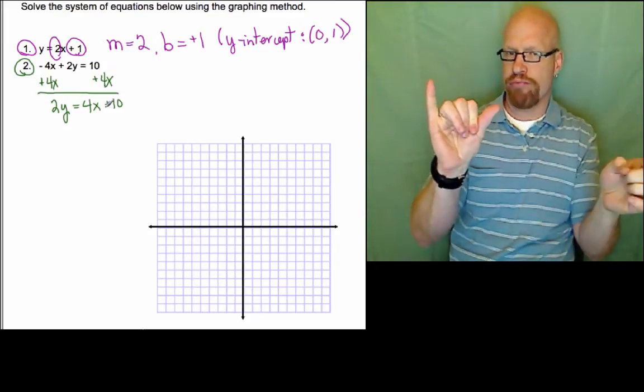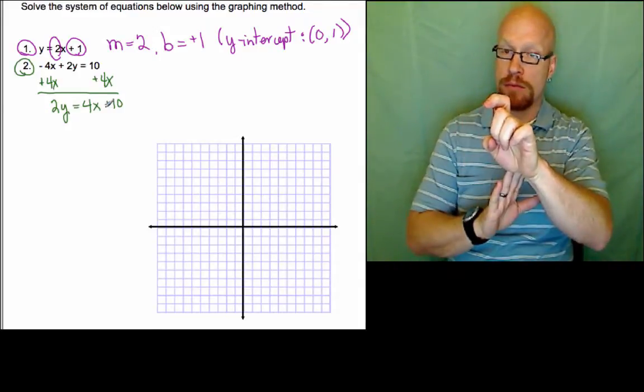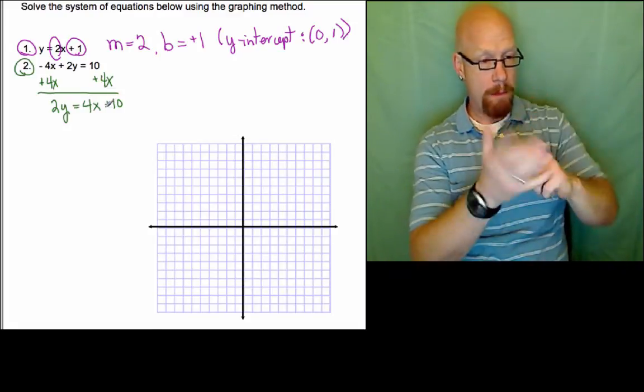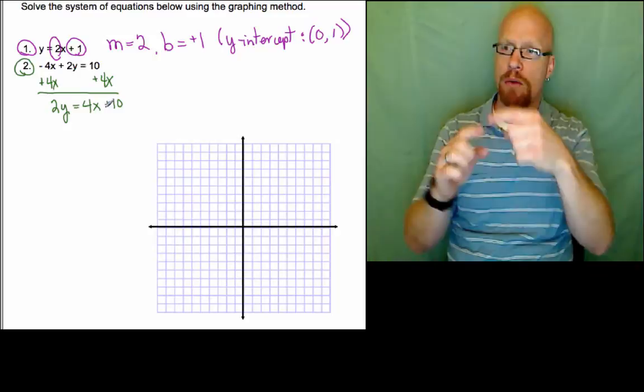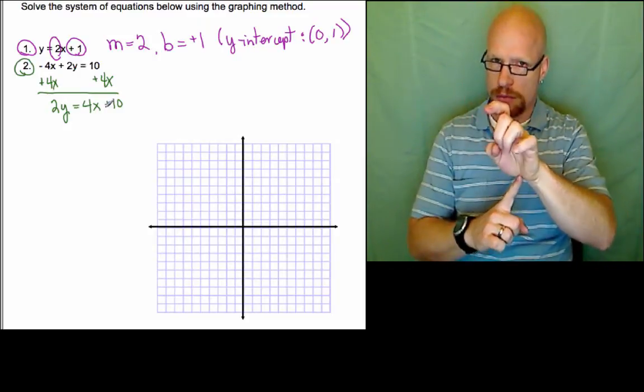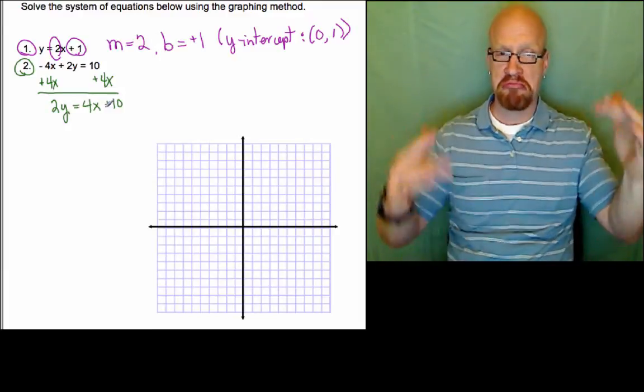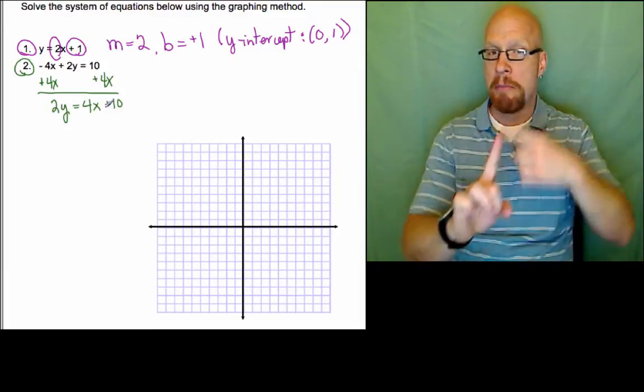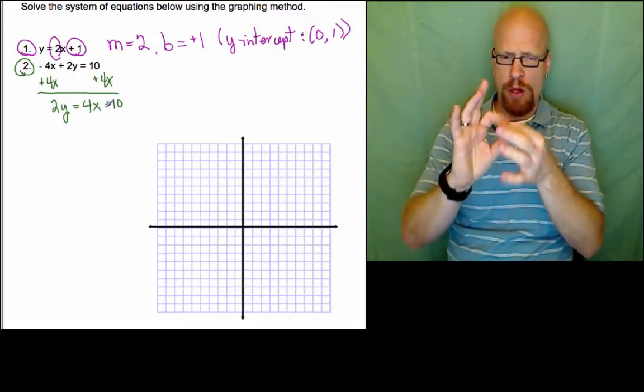The first equation I said before is ready, it didn't need any isolating of y, there was already a y equals equation. The second equation I needed to work on isolating y. We have negative 4x plus 2y. I need to move the 4x over, so I apply the opposite of negative 4x. I add 4x to both sides, now I'm left with 2y equals 4x plus 10.